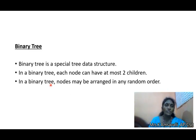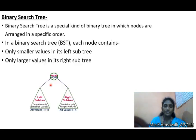Binary tree is a special tree data structure. In a binary tree, each node can have at most two children. Nodes may be arranged in any random order, whereas the binary search tree is a special kind of binary tree in which nodes are arranged in a specific order.